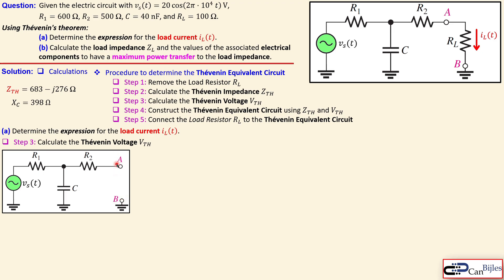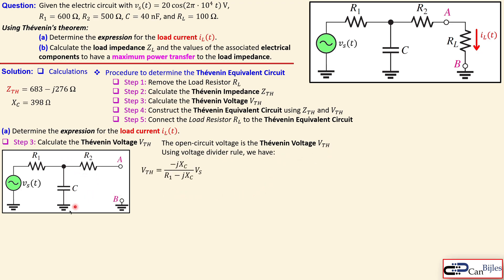The Thevenin voltage between nodes A and B is the open-circuit voltage. With the load removed, there is no current through R2, so we measure the voltage across capacitor C. We use the voltage divider rule: VTH equals (−jXC) divided by (R1 − jXC) times Vs. In phasor form, Vs is 20∠0° volts, since there is no phase shift in the cosine expression and the amplitude is 20.